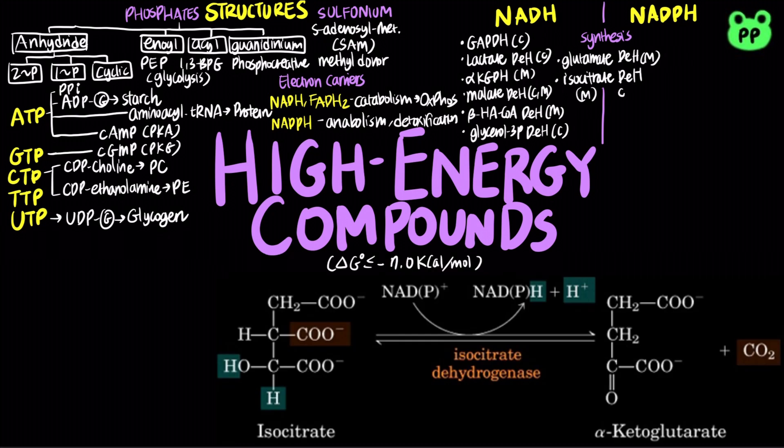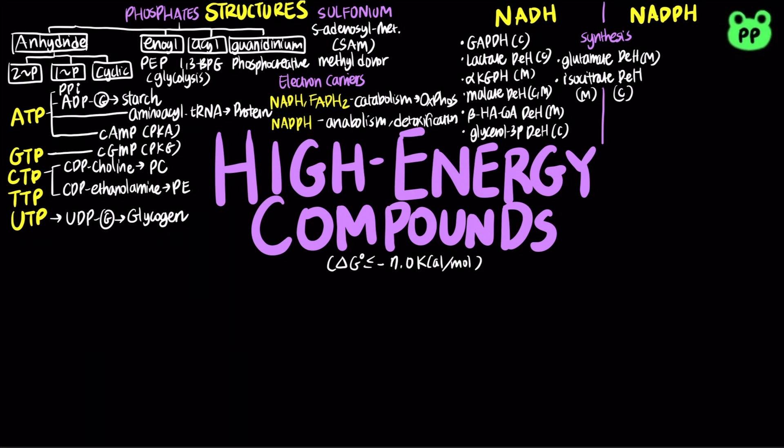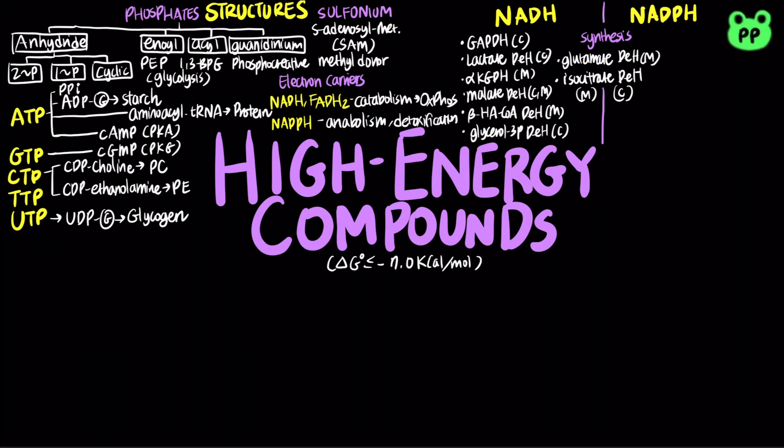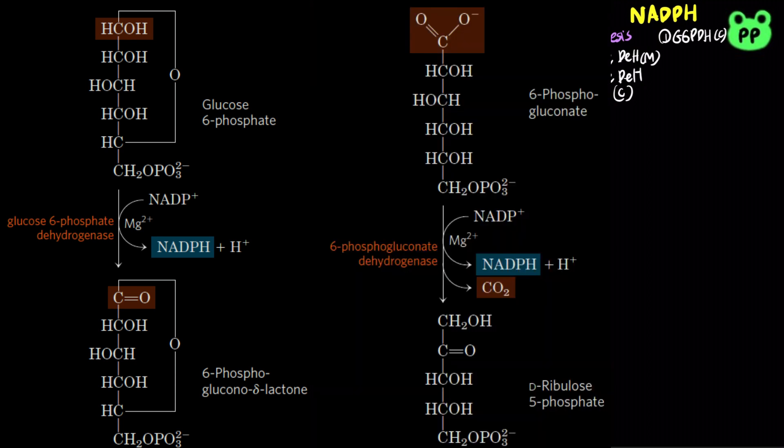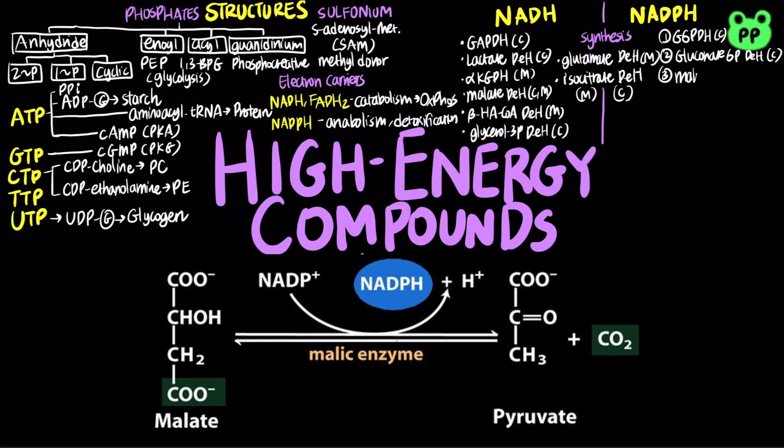Cytosolic isocitrate dehydrogenase can synthesize NADPH. However, the main enzymes that synthesize NADPH are glucose-6-phosphate dehydrogenase and gluconate-6-phosphate dehydrogenase from the pentose phosphate pathway that occurs in cytosol, as well as malic enzyme, which is one of the anaplerotic reactions of the TCA cycle, which also occurs in the cytosol.